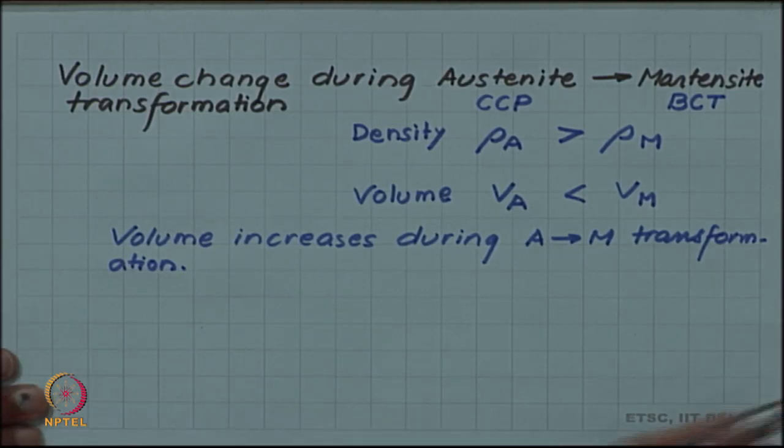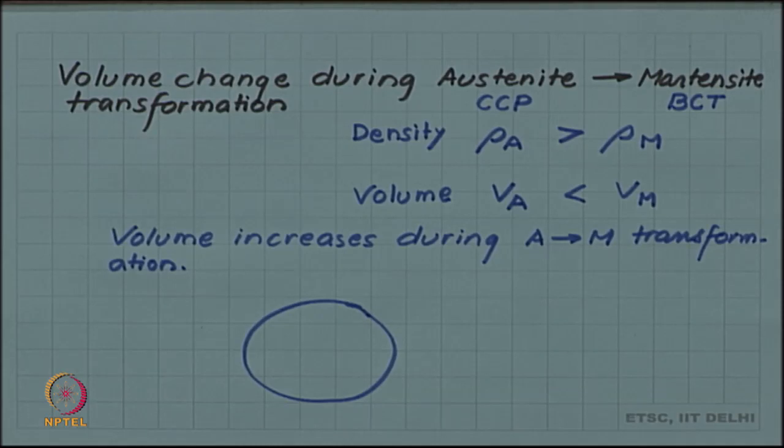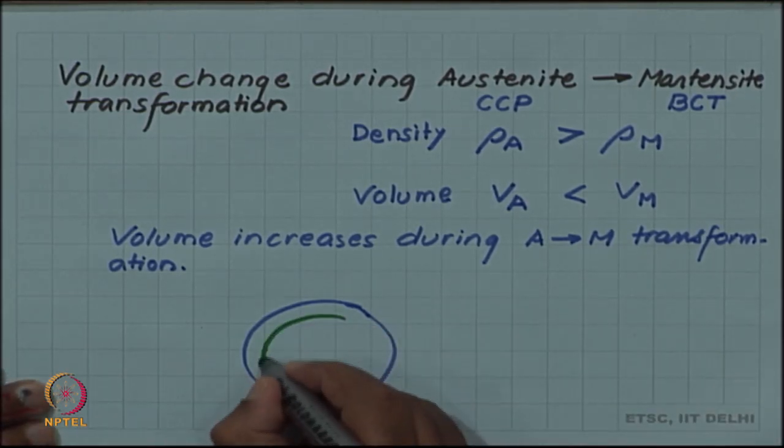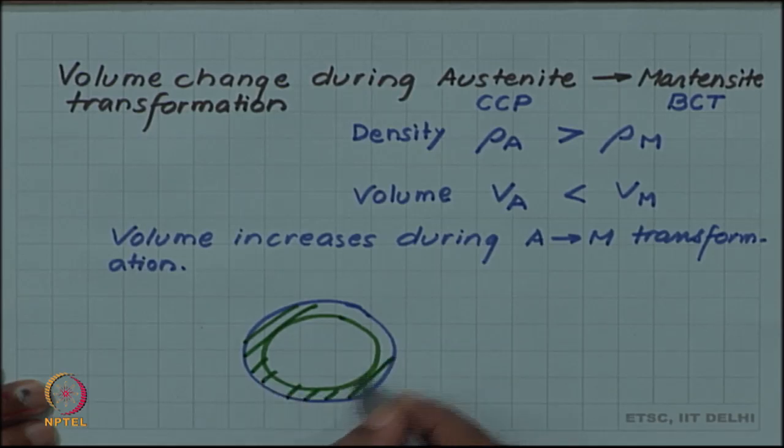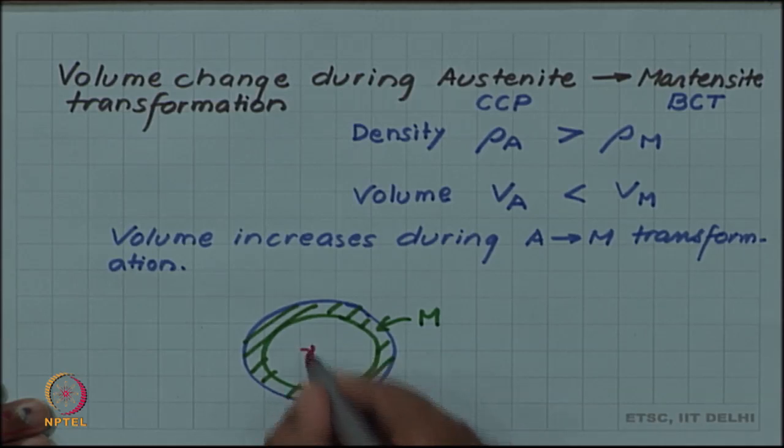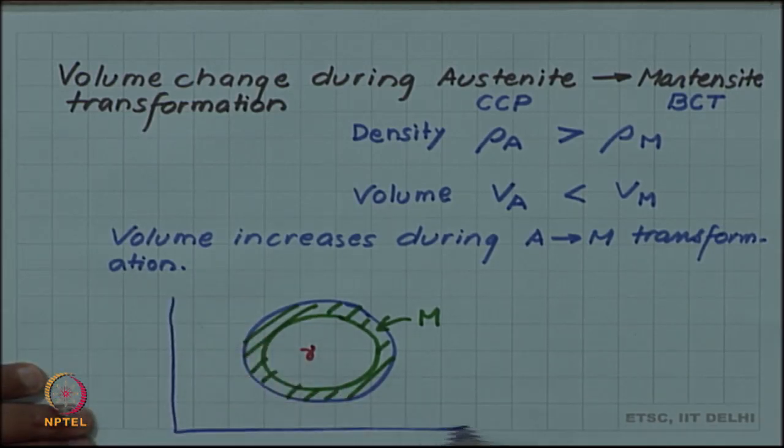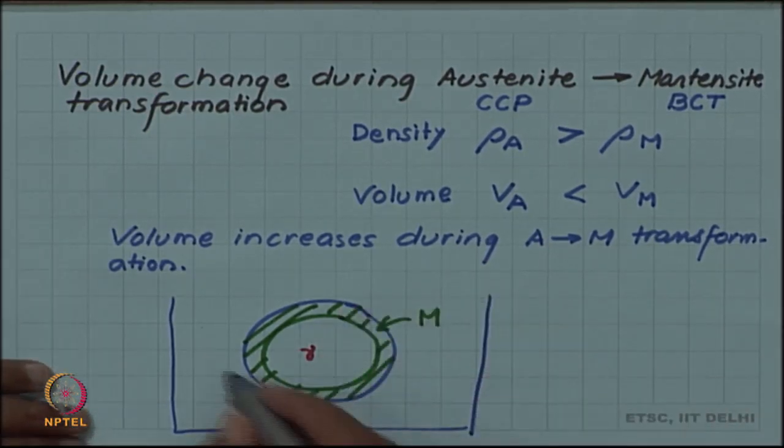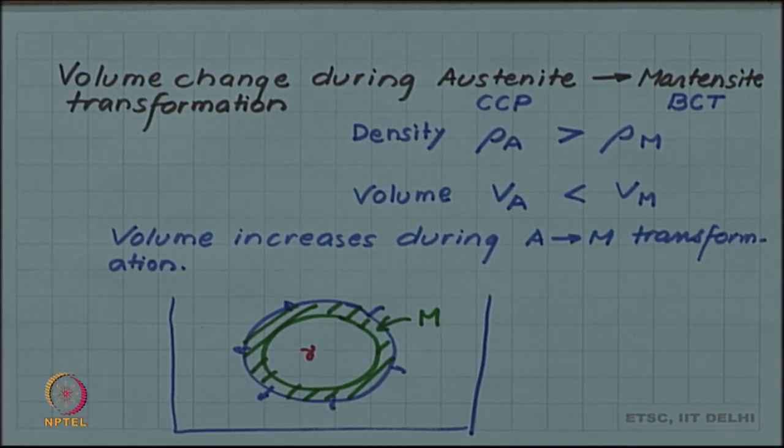This volume increase is now going to cause some problem in our large component quenching. We saw that initially the outer shell which cooled faster formed martensite. So this has formed martensite and this involved a volume increase, but the constraint for that increase was much less because it was in the quenching medium. Since the component was in quenching medium, martensite wanted to expand and there was a space for it to expand at least outwardly. So outwardly there was no constraint for volume expansion.